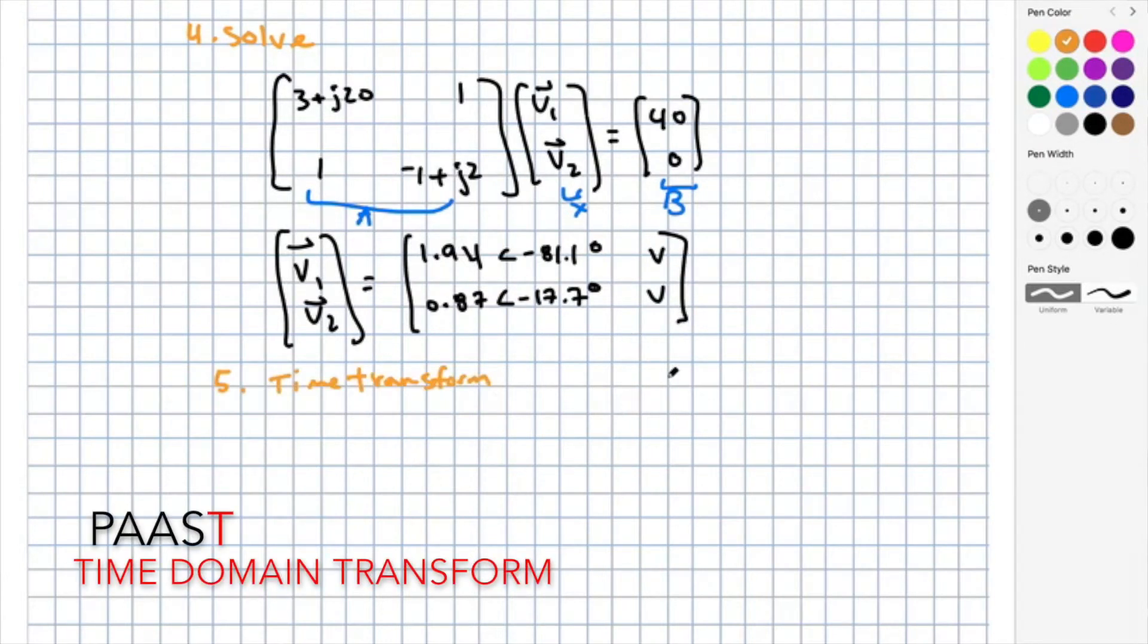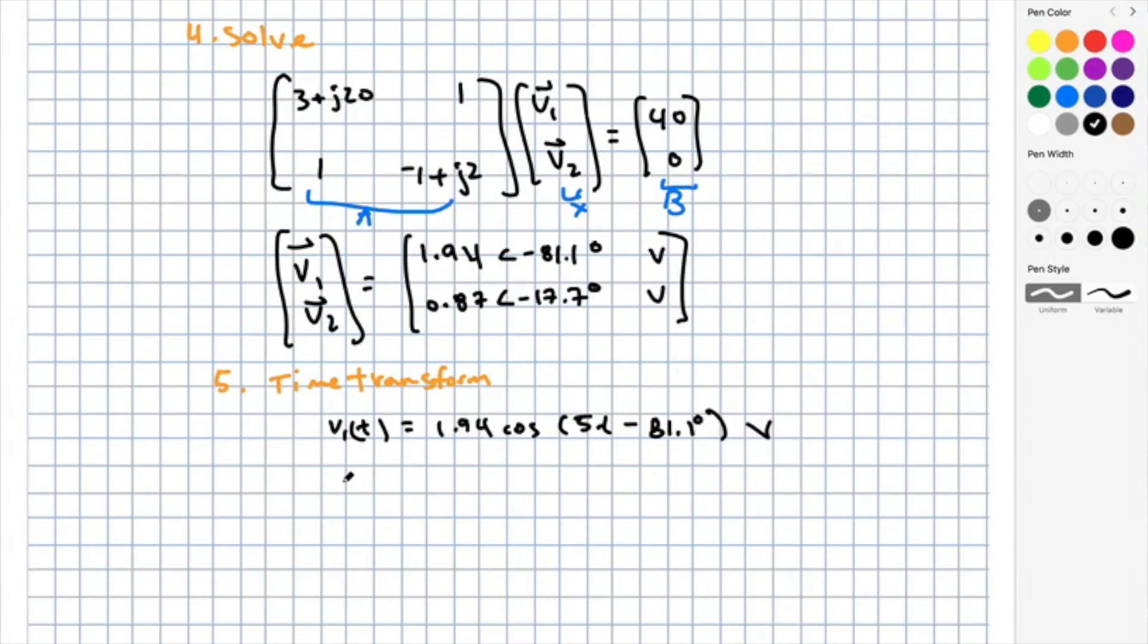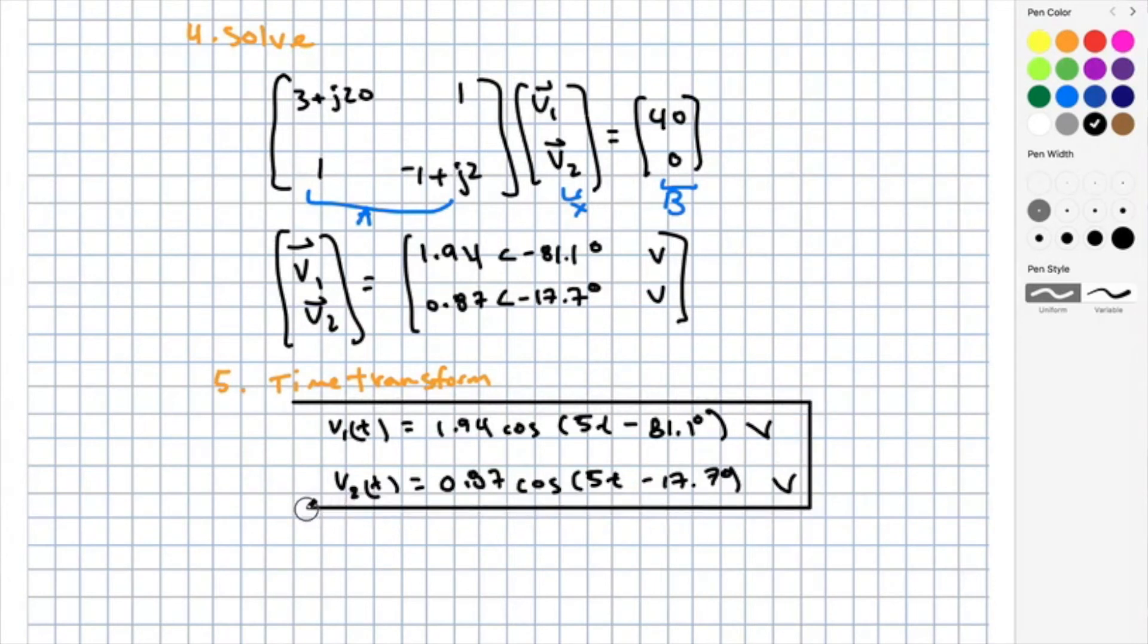I'm not done yet. I need to take the final step, which is the time transform or inverse phasor transform. Taking this transform, I get v1 of t equal to 1.94 cosine of 5t minus 81.1 degrees volts and v2 of t equal to 0.87 cosine of 5t minus 17.7 degrees volts. Now, we are done.